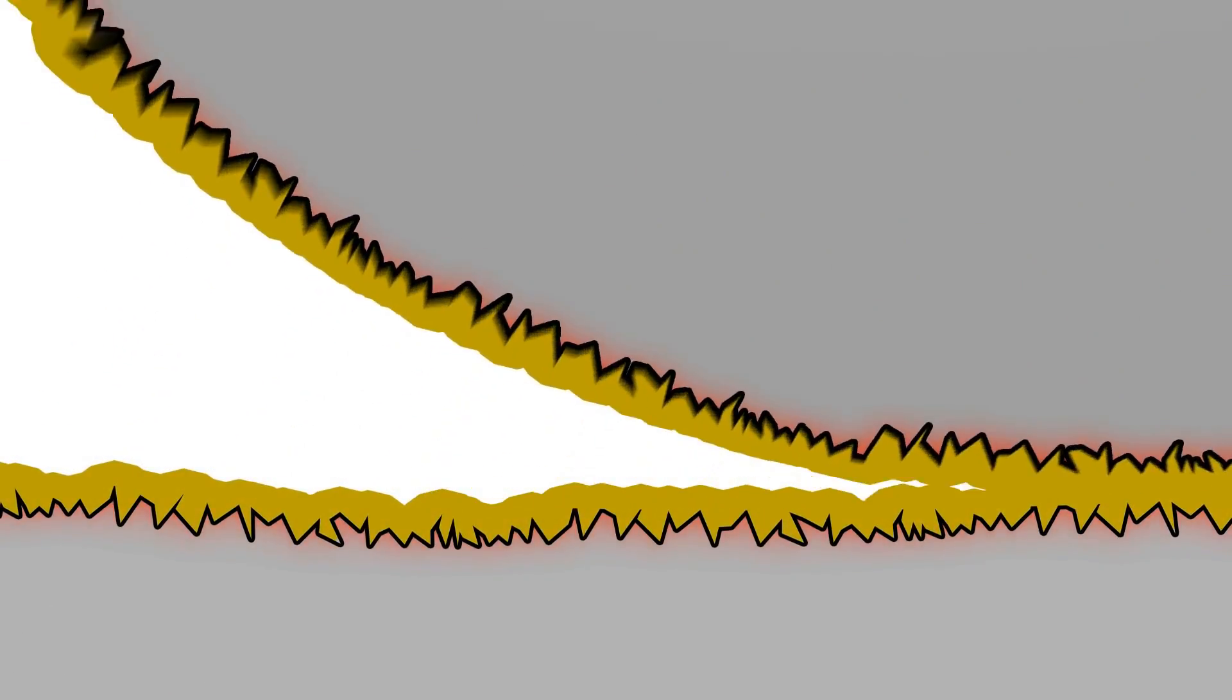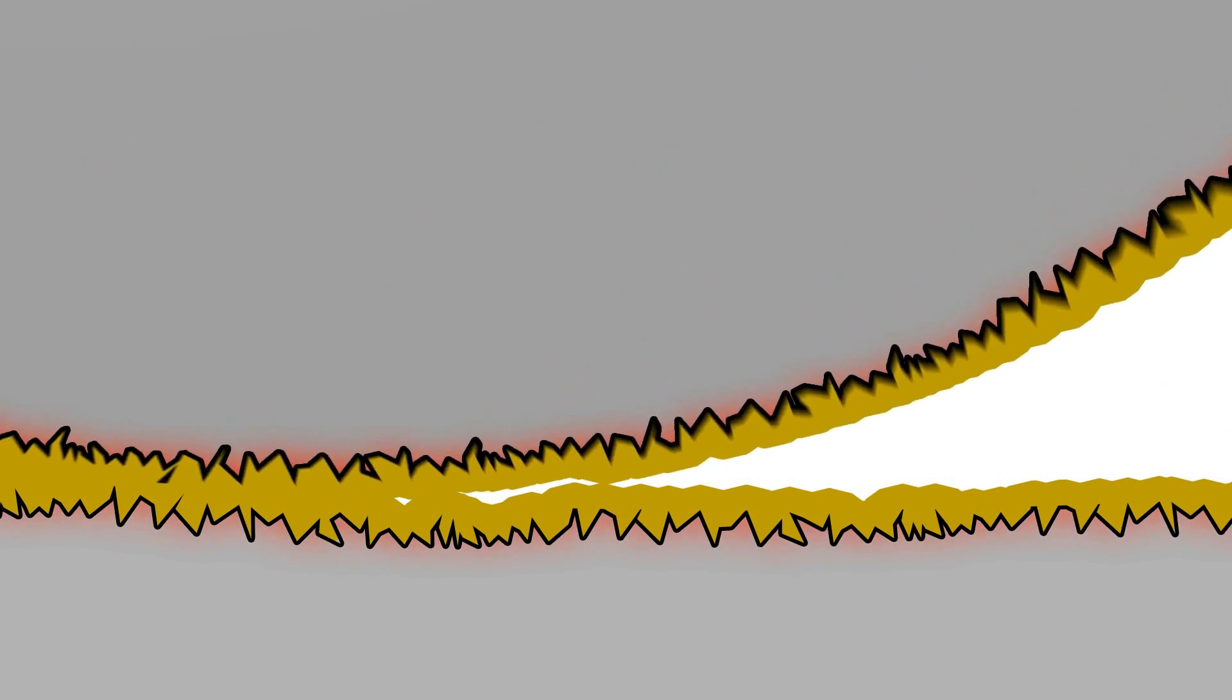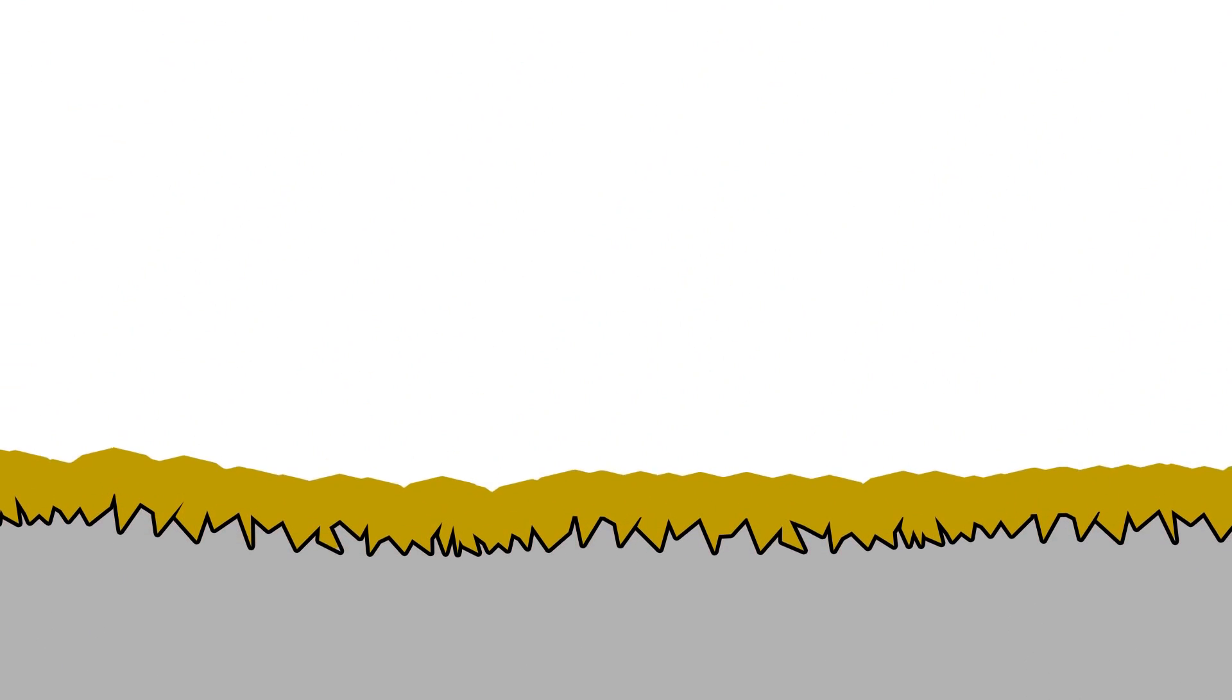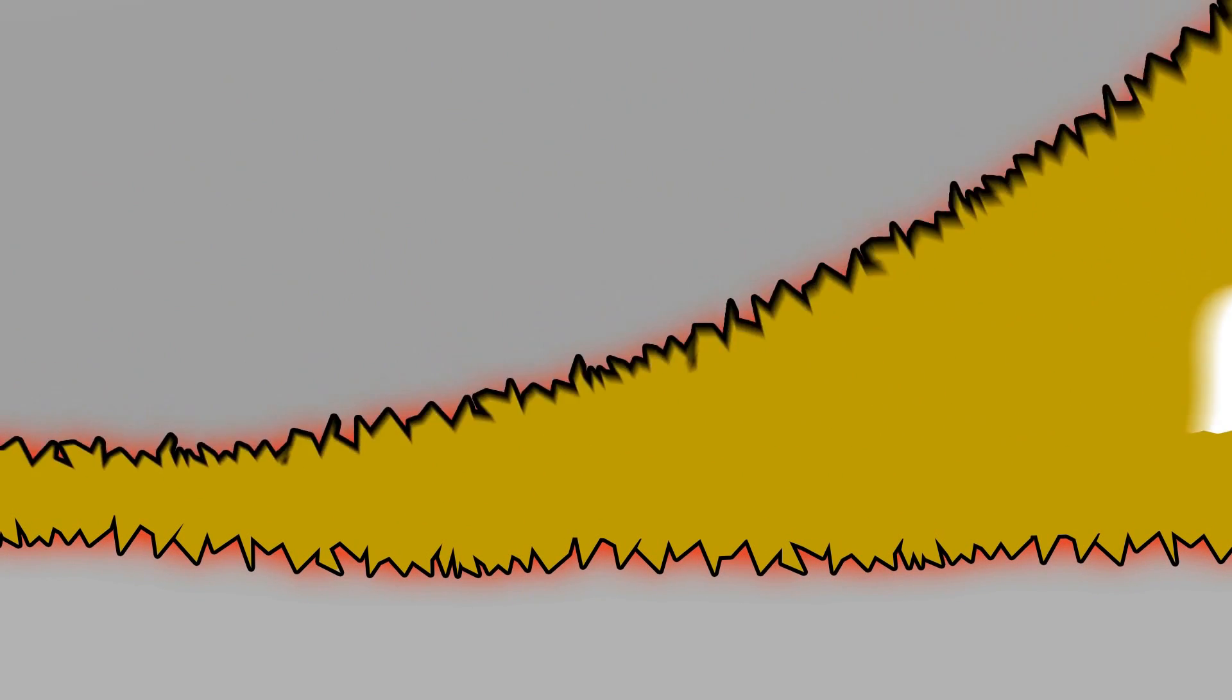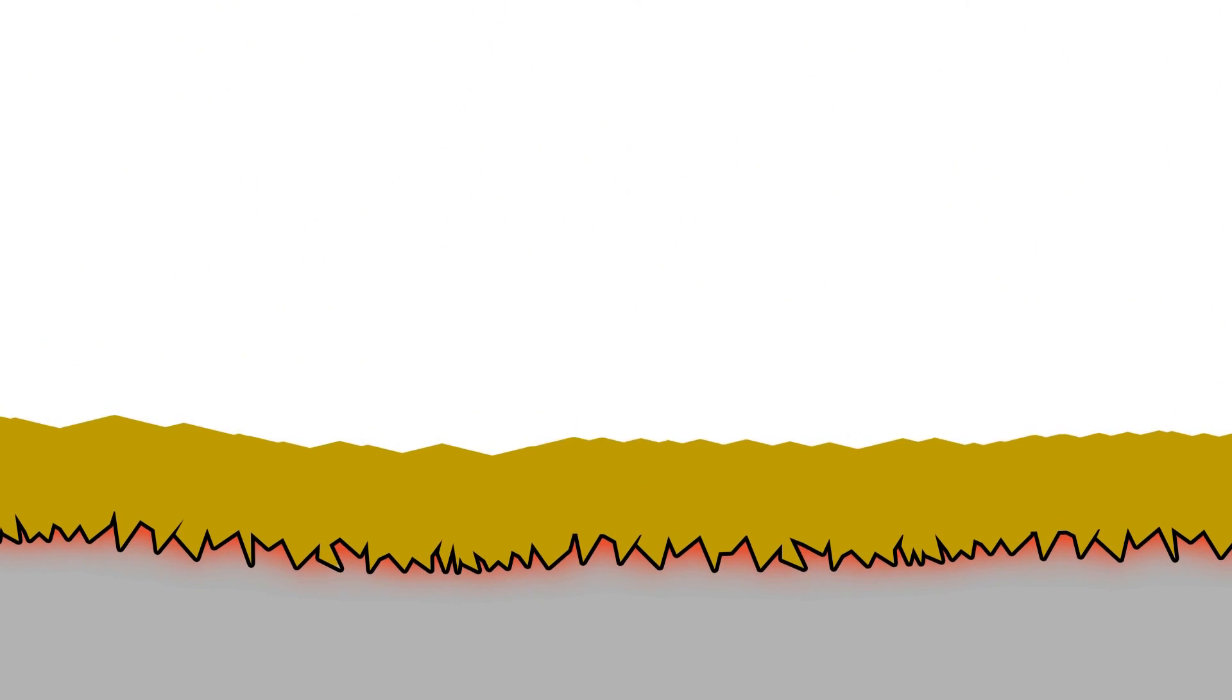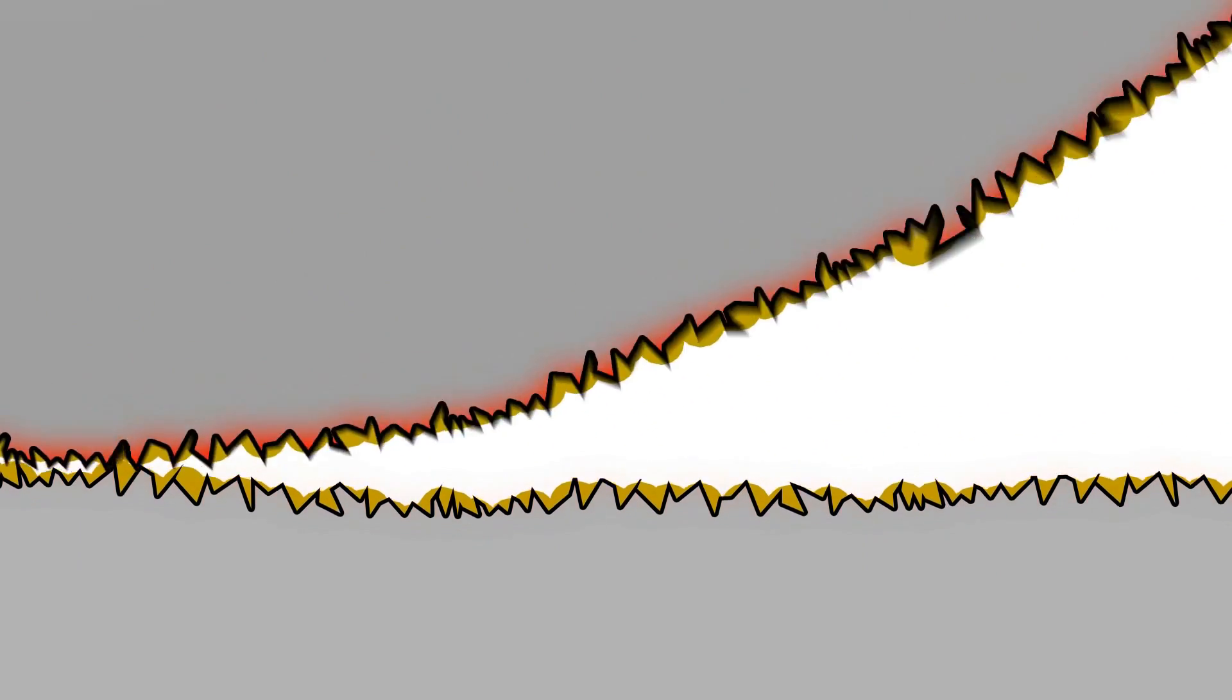Grease serves a simple purpose: to reduce friction and dissipate heat. Too much lubricant builds pressure inside the bearings. Too little creates excessive friction and heat.